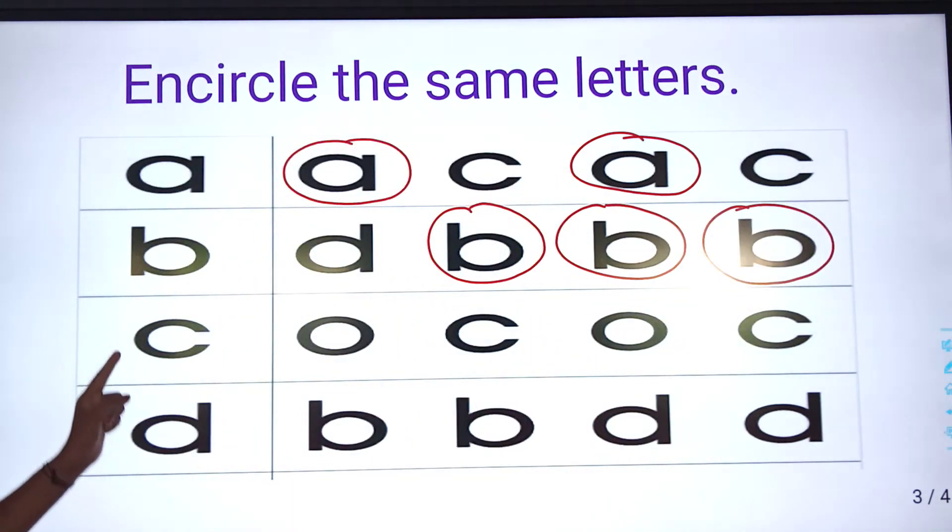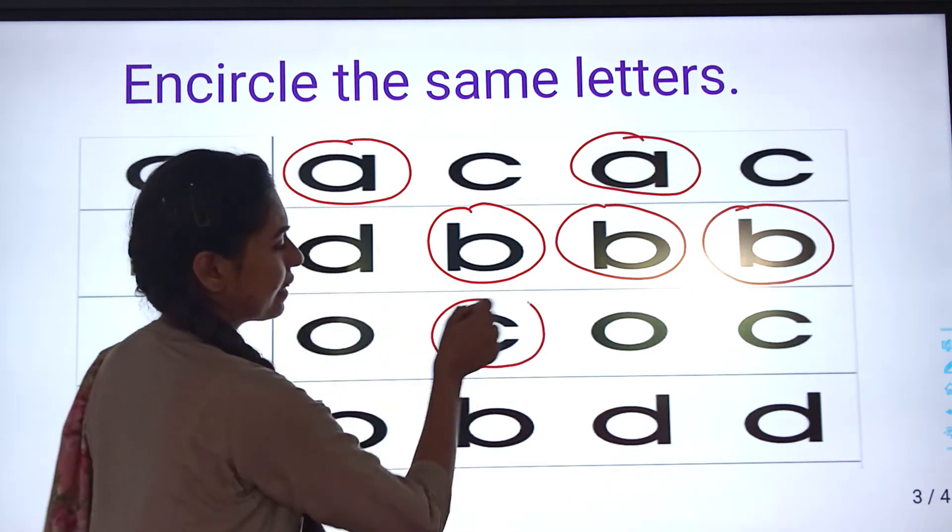Come to the next letter. Small letter c. Then, haa, c mein circle karay ga.